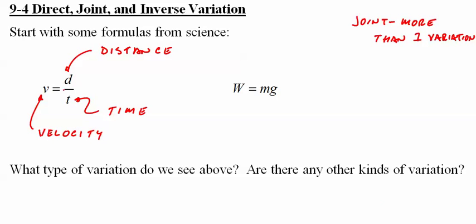So distance varies directly with velocity. Meaning, longer the distance, assuming the time doesn't change, higher the velocity. If you do a longer distance in the same amount of time, you're going faster.